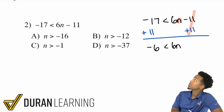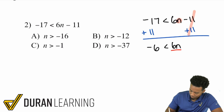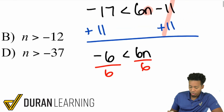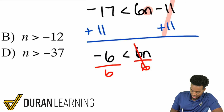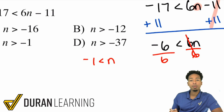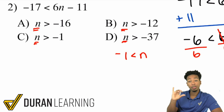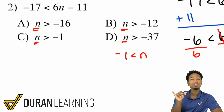From here, we're going to divide both sides by 6 to get n by itself. That cancels out on the right side, and you get negative 6 divided by 6 is negative 1. So negative 1 is less than n. Now, looking at the answer choices, n is on the right side. What you want to do is flip the sides — switch them — and remember, when you flip the sides, you flip the inequality.